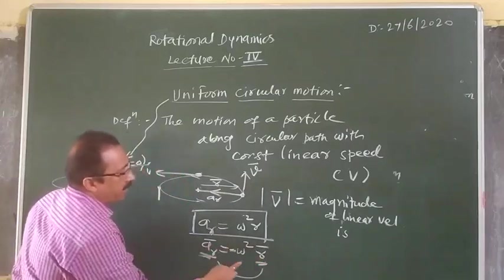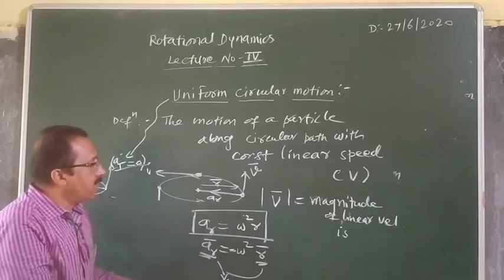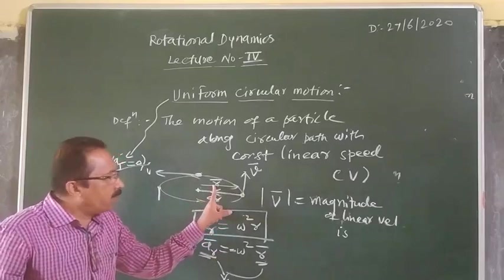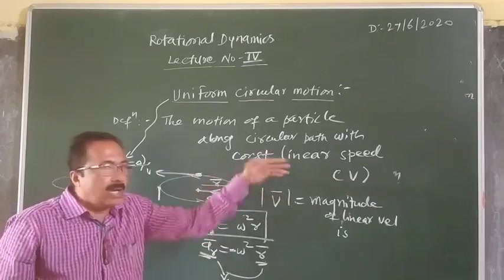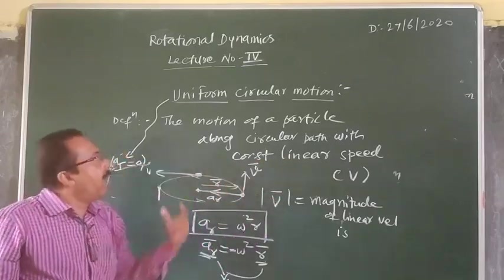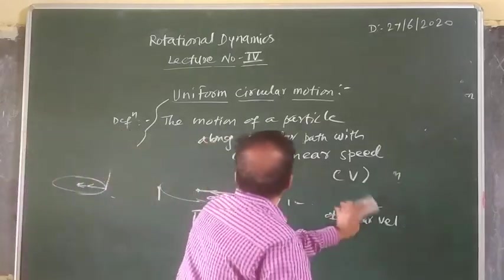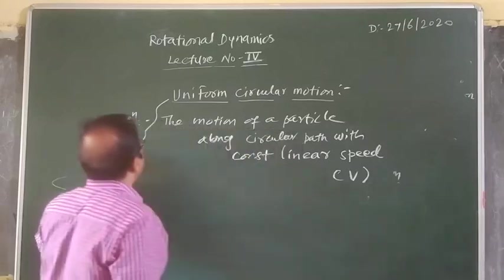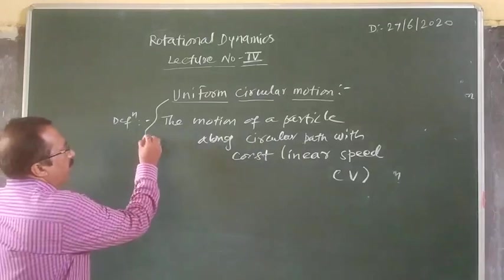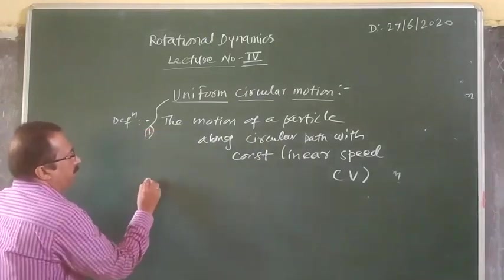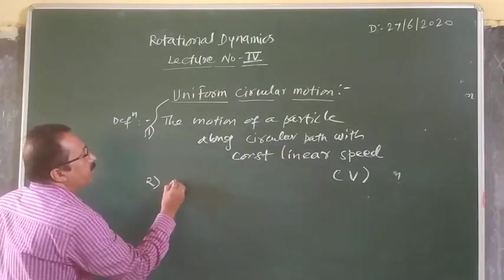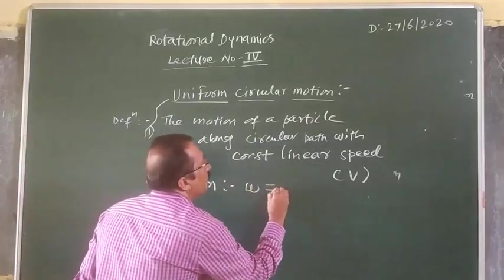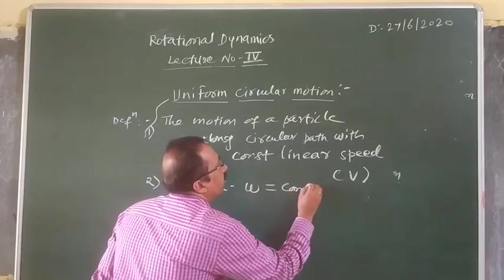This acceleration is centripetal acceleration or radial acceleration, directed towards the center. The motion is also defined as motion with constant angular speed.